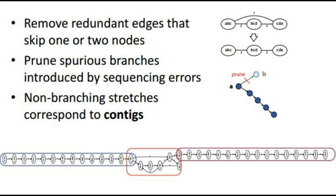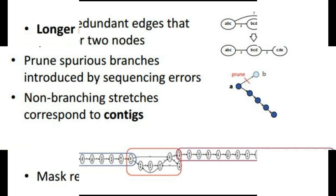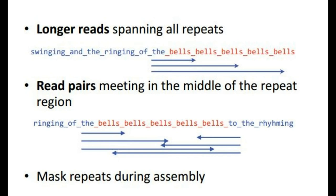This problem can be solved by using longer reads spanning all repeats, or having certain read pairs that meet in the middle of the repeat region. We can also mask the repeats during assembly.